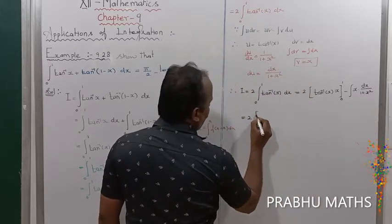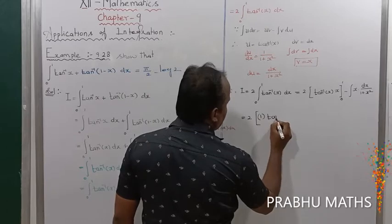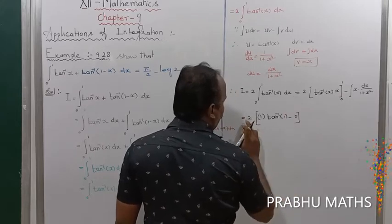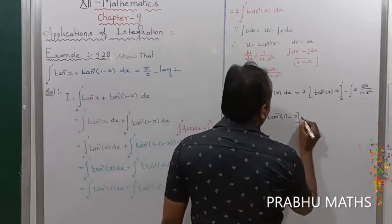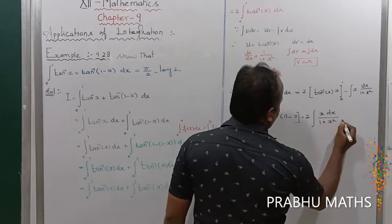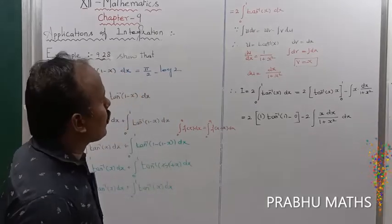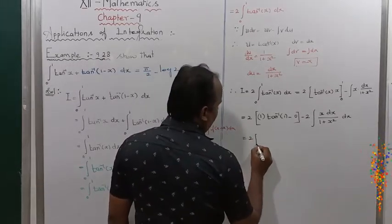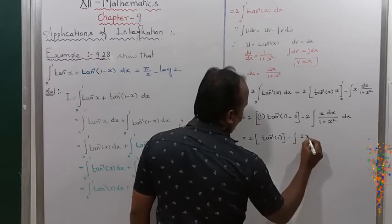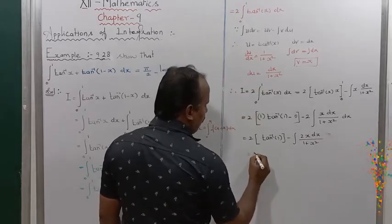That equals 2 into: upper limit 1 gives x·tan inverse of x equals 1 times tan inverse of 1, minus lower limit 0 gives 0. So the first term is fully completed. Then the 2 is brought inside: minus 2 into integral of x dx divided by (1 plus x squared). So it equals 2 into tan inverse of 1, minus integral of 2x dx divided by (1 plus x squared).